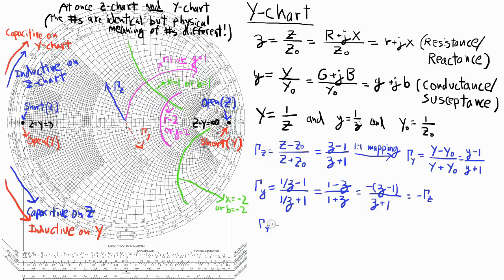So we saw that gamma y is equal to the negative of gamma z. And as I mentioned before, this implies that the magnitude of gamma y is equal to the magnitude of gamma z, while the phase of gamma y is equal to the phase of gamma z plus 180 degrees.